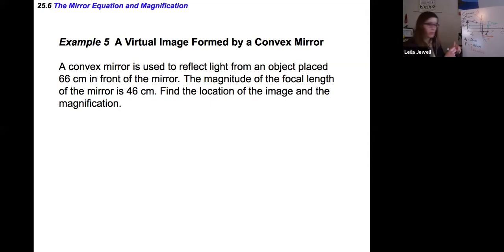Anytime you have a convex mirror, it has to have that negative focal length. So you need to fill that in yourself. We're trying to find the location of the image, d_i, and also the magnification.